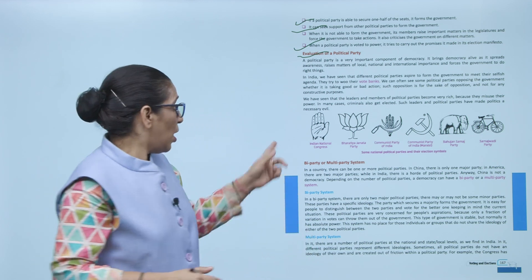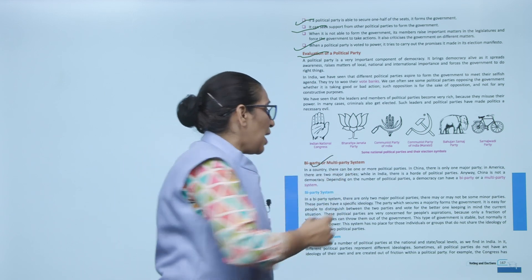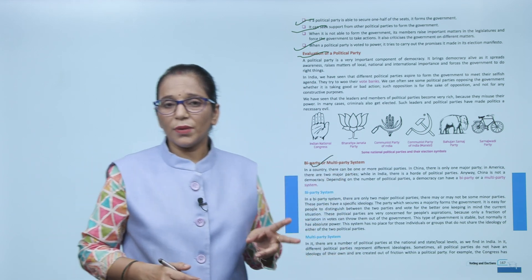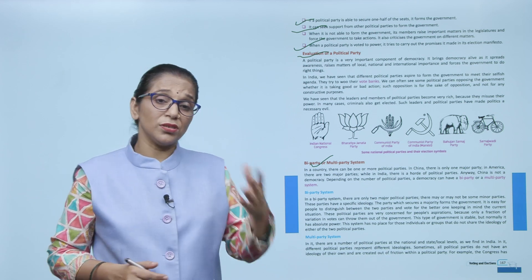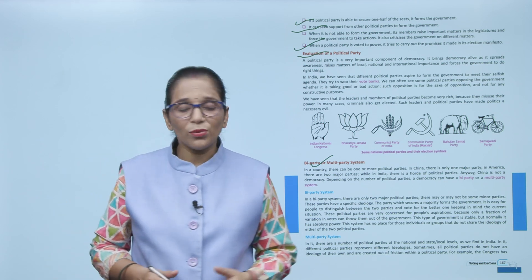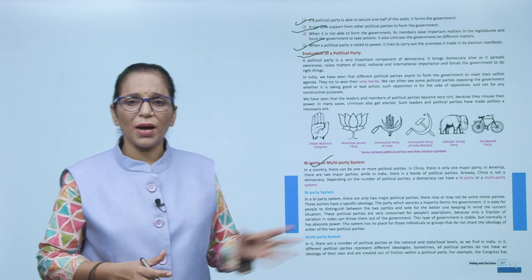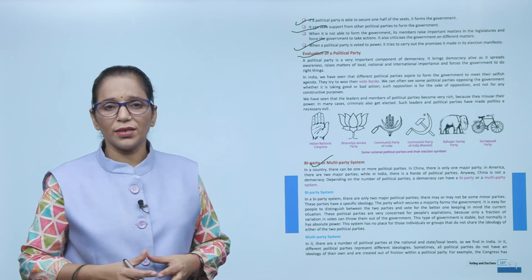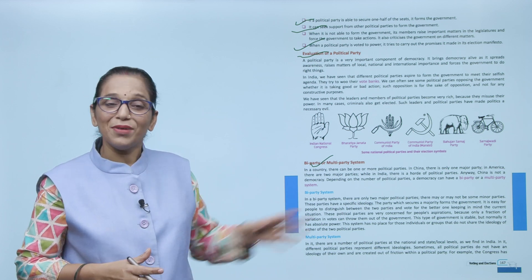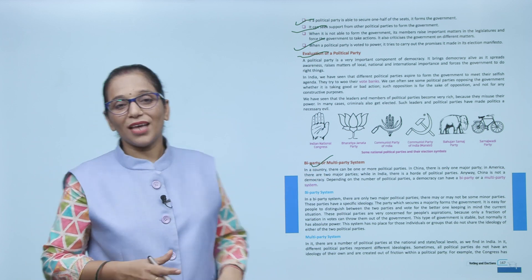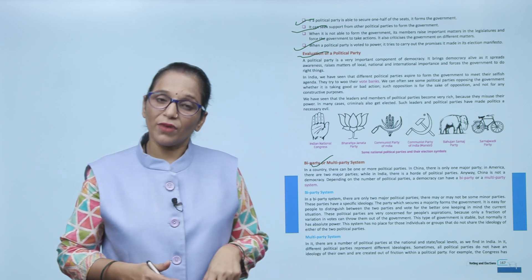Now let's talk about the biparty and multi-party system. Countries with two political parties are called biparty systems and those with more than two parties are called multi-party systems. In democracy you will see both biparty and multi-party systems. India has a multi-party system and America has a biparty system where two major parties work.